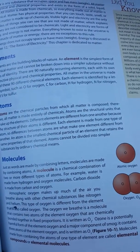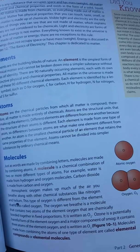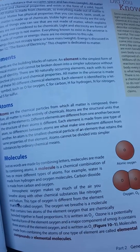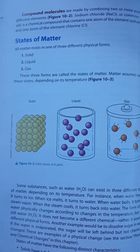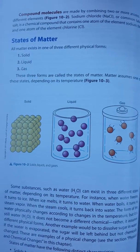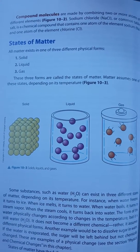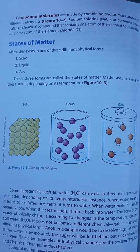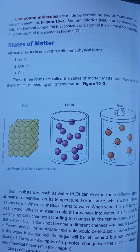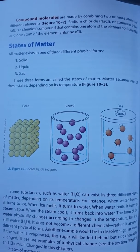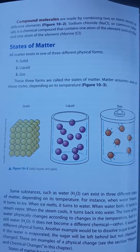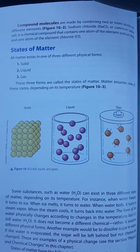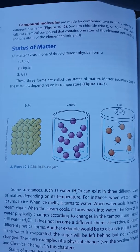Molecules made from combining the atoms of one type of element are called elemental compounds or elemental molecules. Compound molecules are made by combining two or more atoms of different elements. Sodium chloride, or common table salt, is a chemical compound that contains one atom of the element sodium and one atom of the element chlorine.